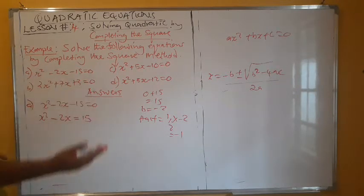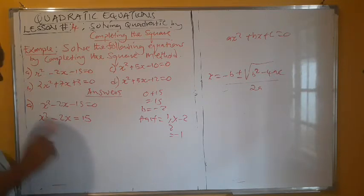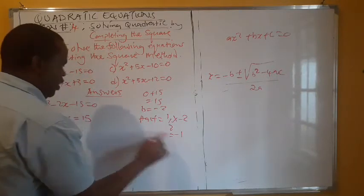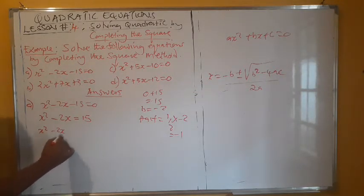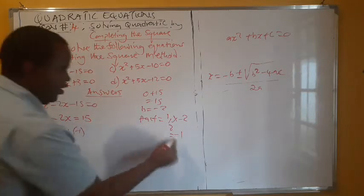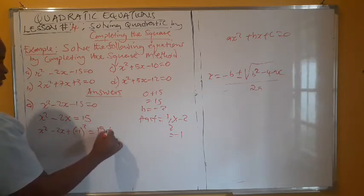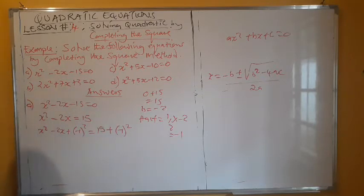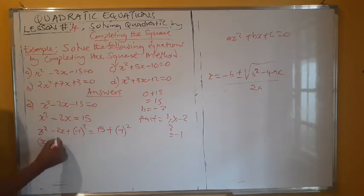So you identify b and find its half. Even if b were 7, you would just take half of 7. Here we found negative 1. What we are going to do with negative 1 is add its square to both sides. So we write x squared minus 2x plus negative 1 squared, because this is what we found — but you square it. Whatever you do on the left-hand side, you do on the right-hand side.